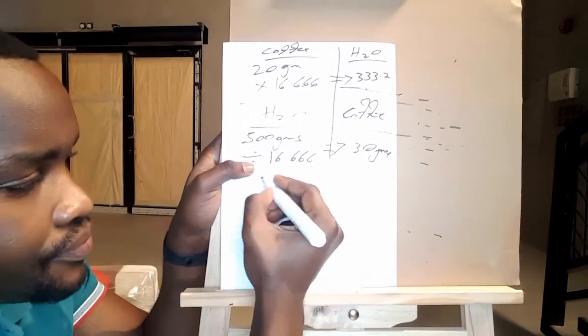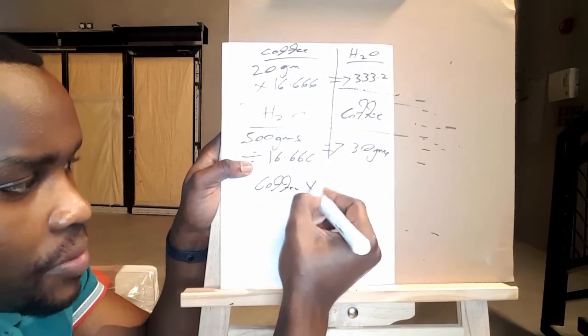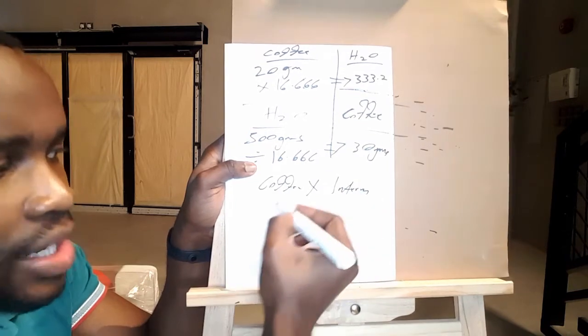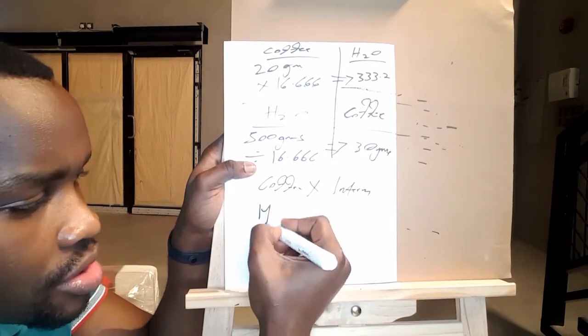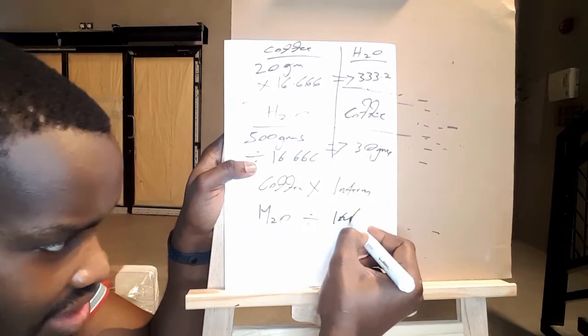Remember, when you have coffee grams, you multiply it with the intermediate. And once you have the grammage of water, you just divide it with the intermediate.